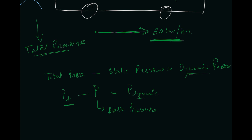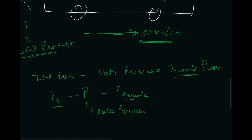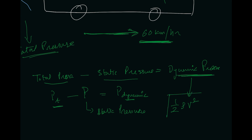This is all about total pressure, static pressure, and dynamic pressure. Understanding the difference between these three is very important when we talk about airspeed, because the difference between total pressure and static pressure gives you the dynamic pressure, which is basically the indication of airspeed. It is also written as half rho v squared, where rho is the density of the fluid and v is the velocity of that fluid. The formula for dynamic pressure is half rho v squared. I hope these concepts are clear. Thank you.